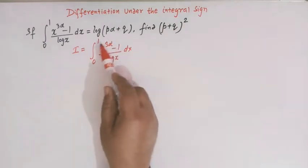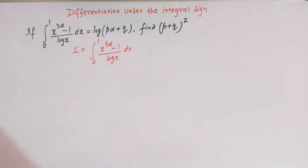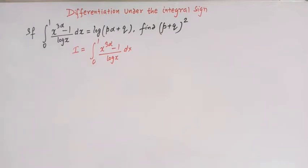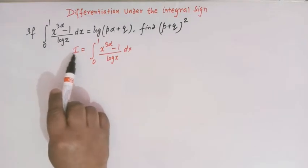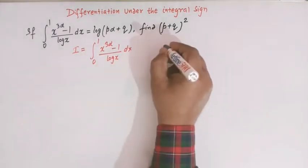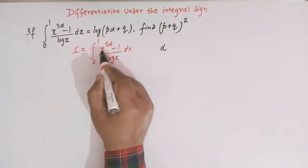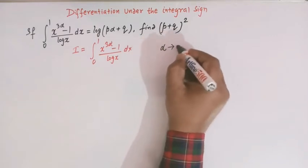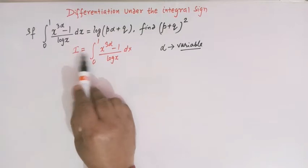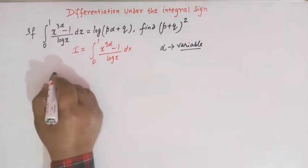If we look at this integrand, we see that it is not easy or straightforward to find the value of this integral. Here we'll make use of the concept of differentiation under the integral sign. We'll differentiate both sides, taking α as the variable — that is, the α which appears in the power of x, as in x to 3α — treating α as the variable and x as the constant.